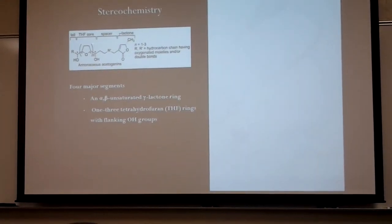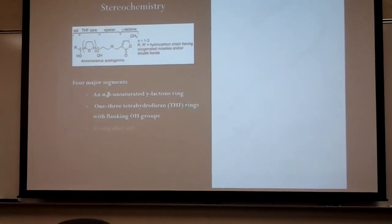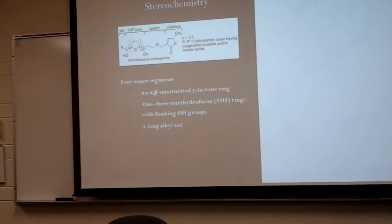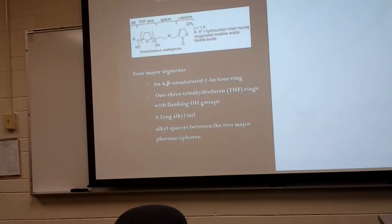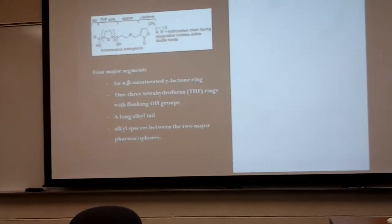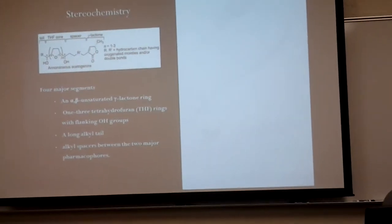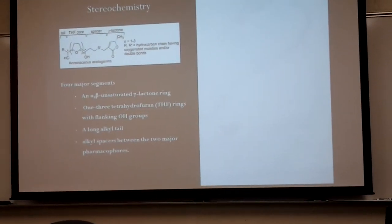THF rings with flanking OH groups, as you can see right here, a long alkyl tail which comes off the end of the THF core, and the alkyl spacers between the two major components which are the gamma-lactone and THF core.